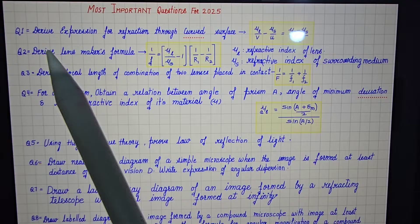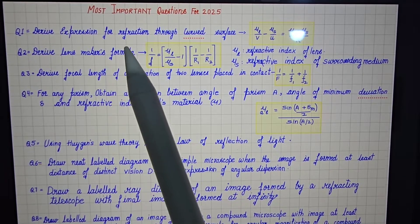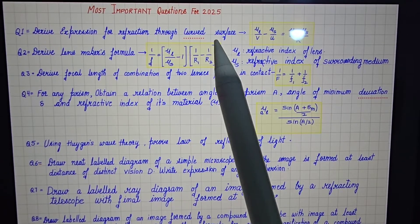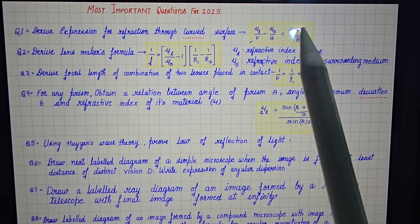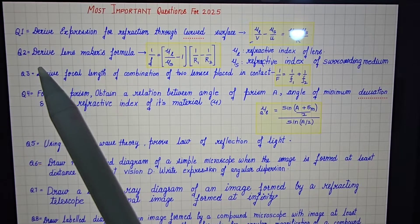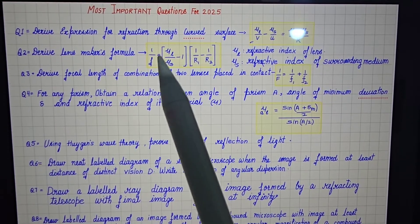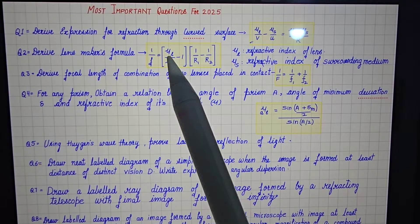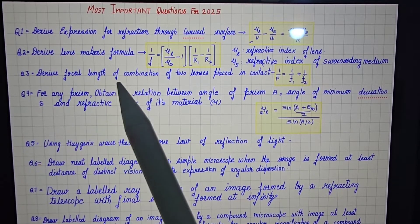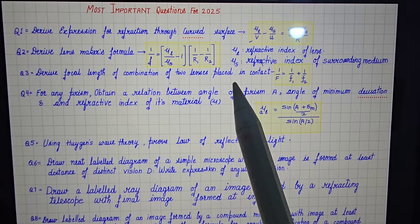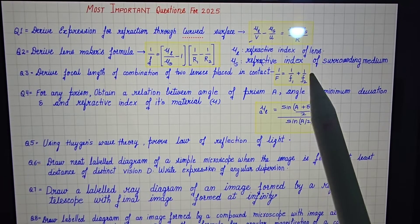So first derivation: derive expression for refraction through curved surface. This derivation is very important for this year. Then lens makers formula, this derivation is very important for this year. And derive focal length of combination of two lenses placed in contact, this derivation is very important.